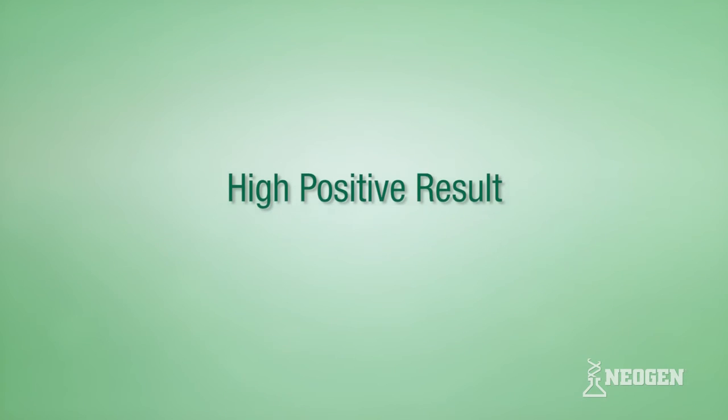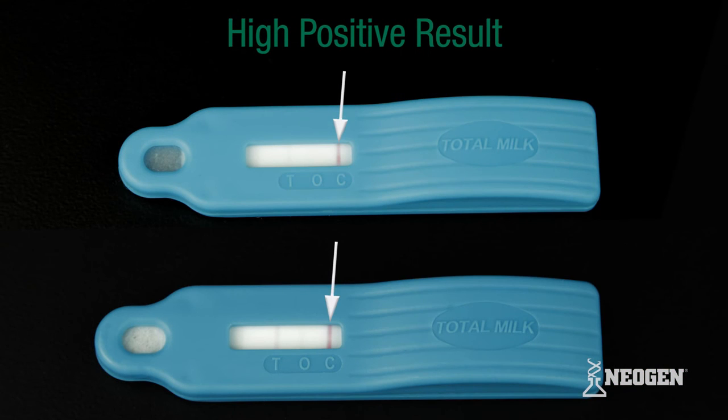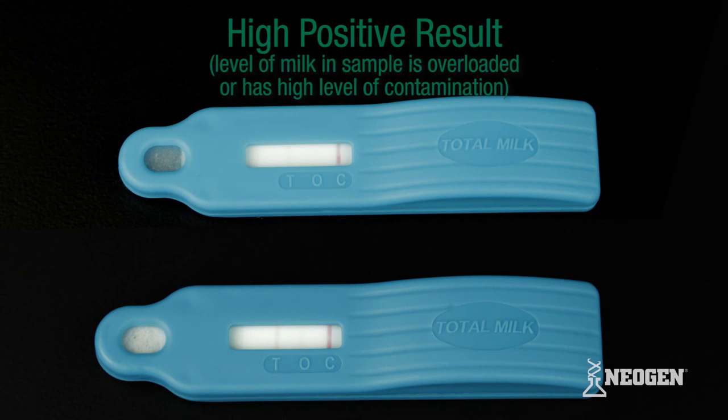High positive result. A line visible at position C, no line visible at position O, and a line visible or absent at position T, indicates the sample is overloaded or has a high level of contamination.